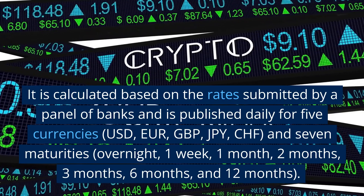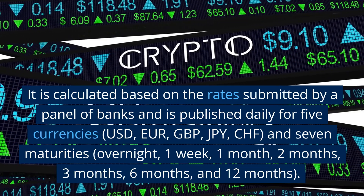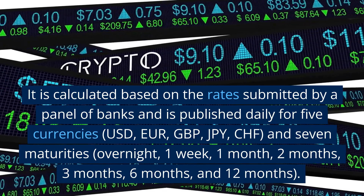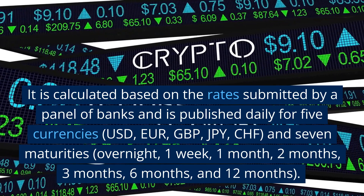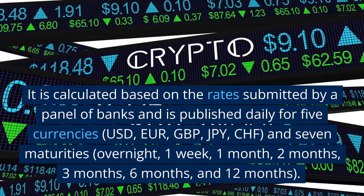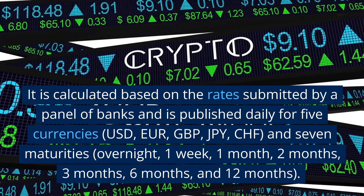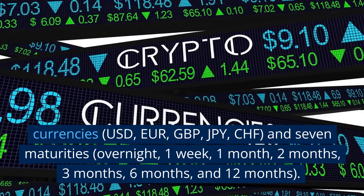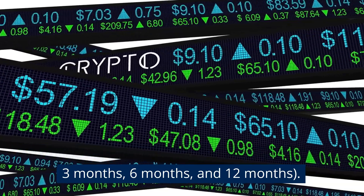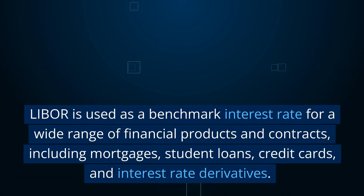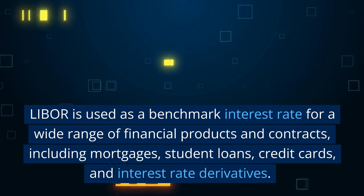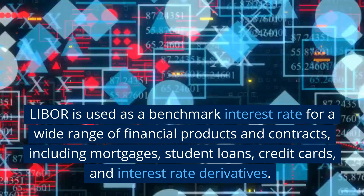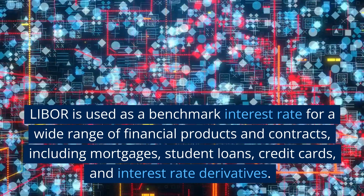LIBOR is published for five currencies — USD, EUR, GBP, JPY, and CHF — and seven maturities: overnight, one week, one month, two months, three months, six months, and twelve months.